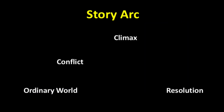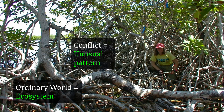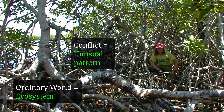A good story begins with a description of an ordinary world, introduces a conflict, comes to a climax, and ends with a resolution. This is called the story arc. We started off in our paper by summarizing what we knew about the ecosystem we were studying. The conflict was expressed as an unexplained spatial pattern in nutrient limitation that we had uncovered at our study site. Some mangrove trees growing on creek banks were nitrogen-limited, other trees were limited by phosphorus, and still others in a transition zone were co-limited by both nutrients. Story-wise, this pattern presented an interesting mystery to be solved.